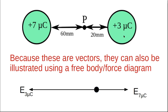The 3 microcoulomb charge is going to make a positive point charge at P move to the left. The 7 microcoulomb charge — also positive — is going to repel P to the right. So the field from the 3 microcoulombs is directed to the left, and the field from the 7 microcoulombs is directed to the right. Remember, arrows in a force diagram must always come out, not go in.